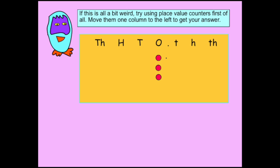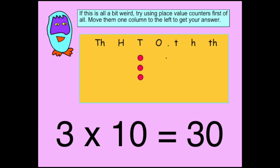If this is all a bit weird, try using place value counters first of all. Move them one column to the left to get your answer. Here you can see 3 times 10 equals 30 by moving those place value counters one place to the left.